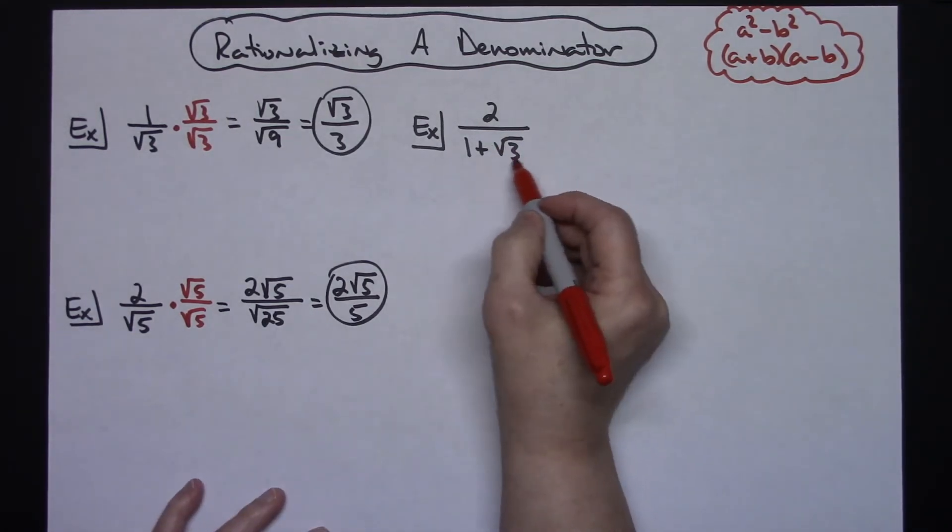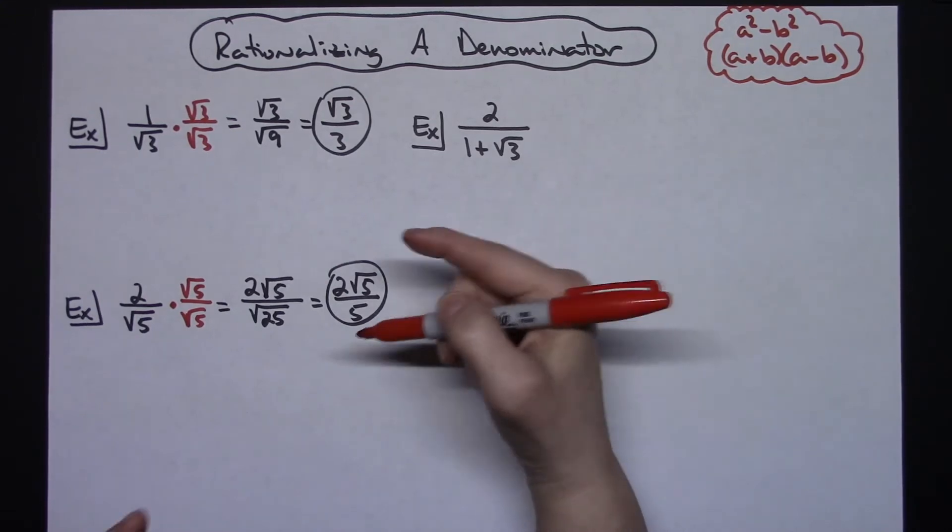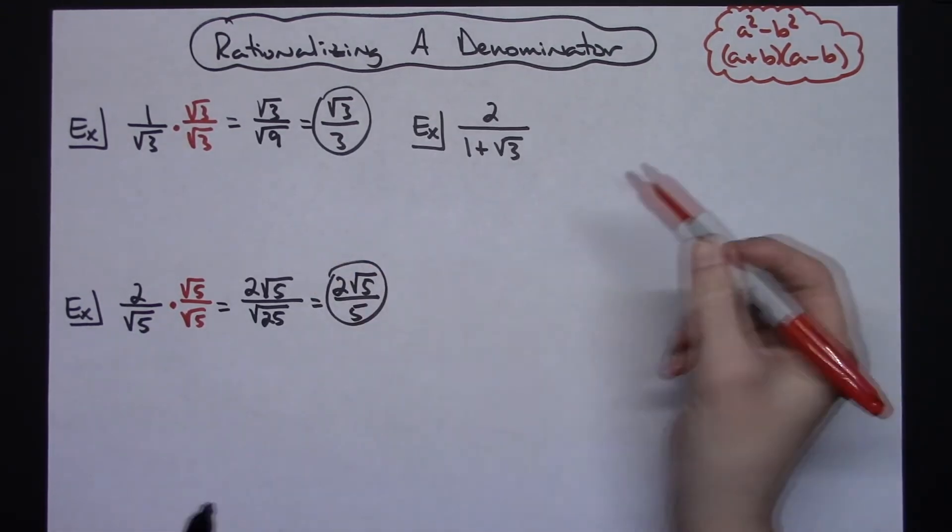Now this one over here, I have a binomial. I've got 1 plus square root of 3. So I'm going to have to multiply still by a form of 1, but I'm going to use the conjugate. Now the reason I'm going to use the conjugate: